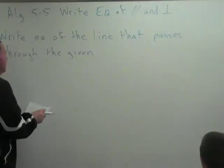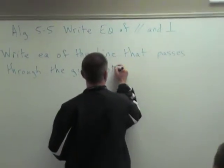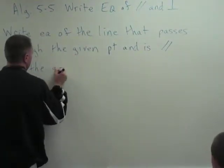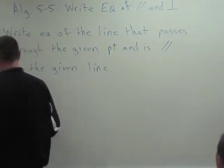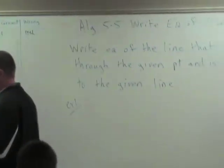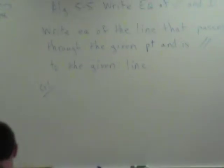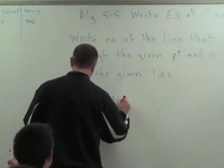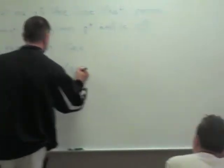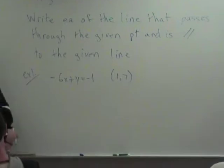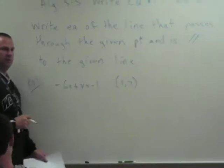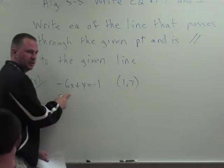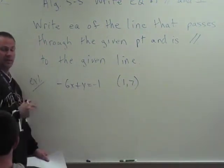Right, equation of the line that passes through the given point and is parallel to the given line. Example 1, I want the equation of this new line that goes through this point. This point is on the new line, not on this one necessarily. This line, this point, the new line contains that point.